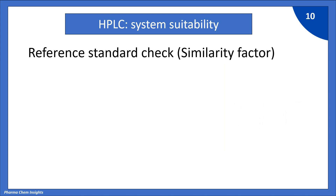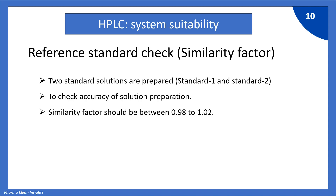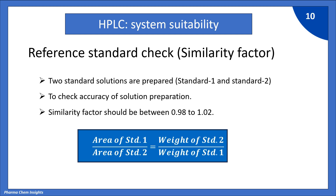Next parameter: reference standard check, also known as similarity factor. In this, two standard solutions are prepared — standard 1 and standard 2. It is used to check the accuracy of solution preparation. The similarity factor should be between 0.98 to 1.02. The formula is: (area of standard 1) / (area of standard 2) = (weight of standard 2) / (weight of standard 1).